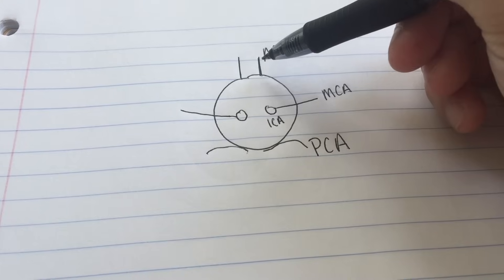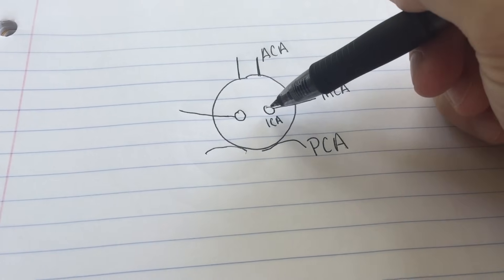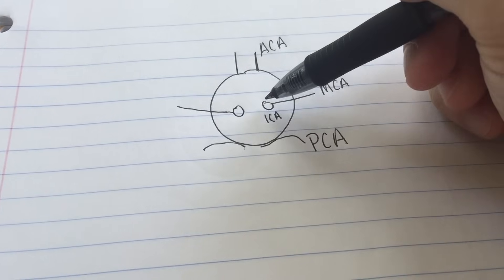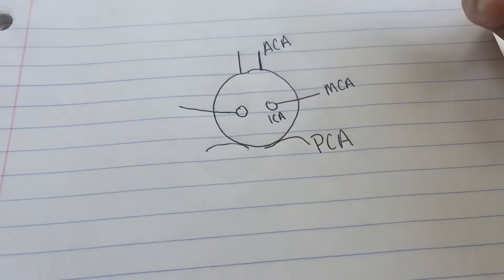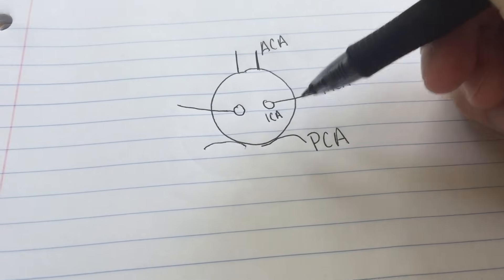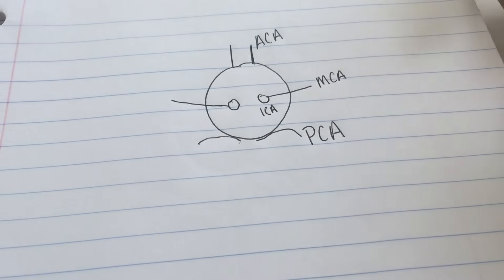So just in review: anterior on the front top, middle going through the middle of the cerebrum giving rise to where I see because it's giving rise to the eyes of the stick figure. ICA for internal carotid and posterior cerebral is our collar that touches the posterior part of the cerebrum.